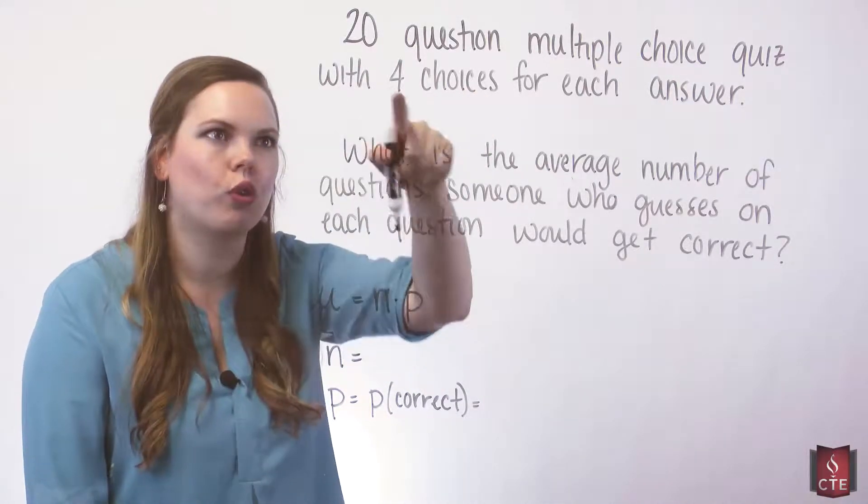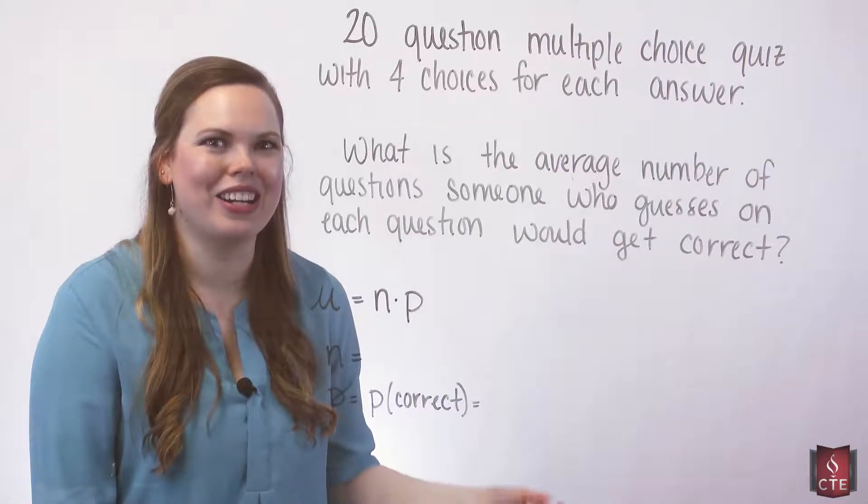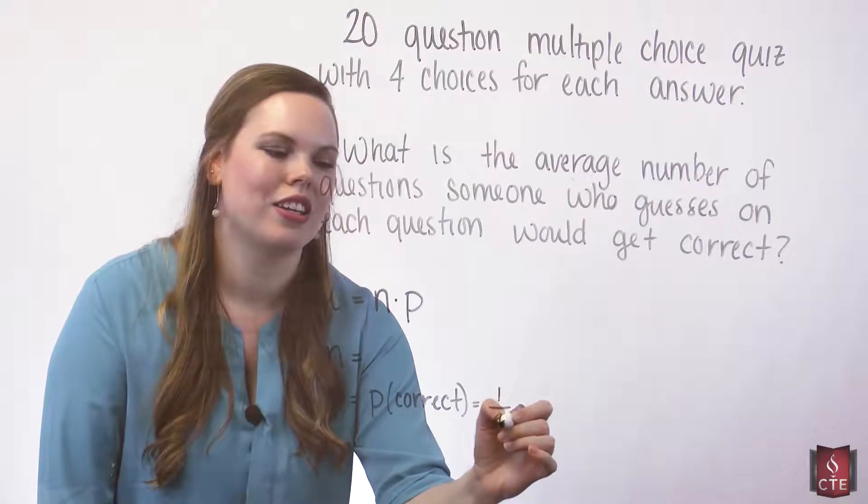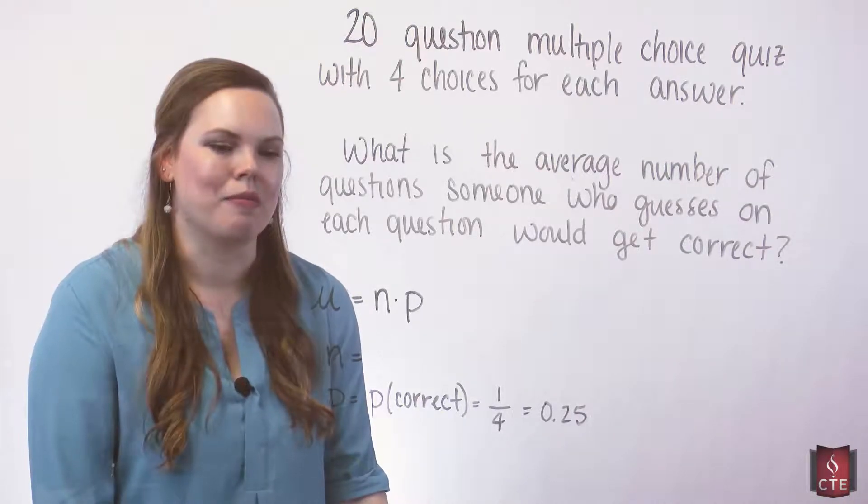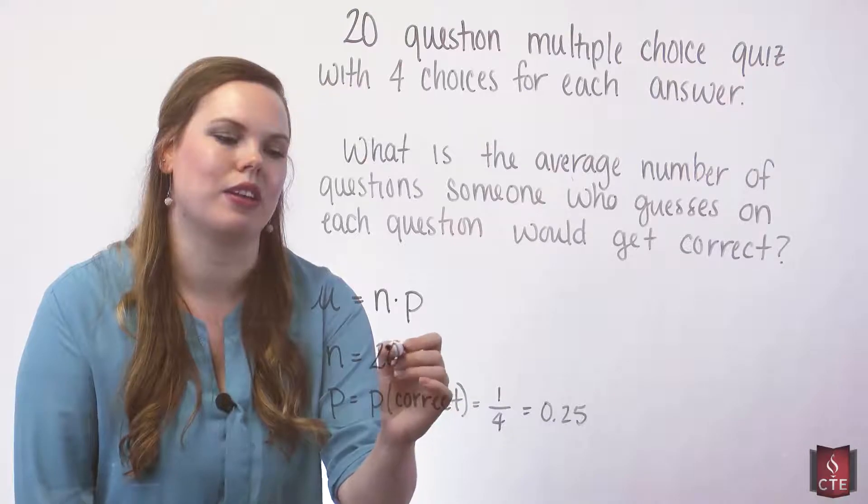Multiple choice quiz, four choices for each answer. One of those is going to be right, the other three are going to be wrong. So we have a one-fourth, or 0.25 chance of getting the question correct. And then our n is the number of questions that we have, so we have 20.